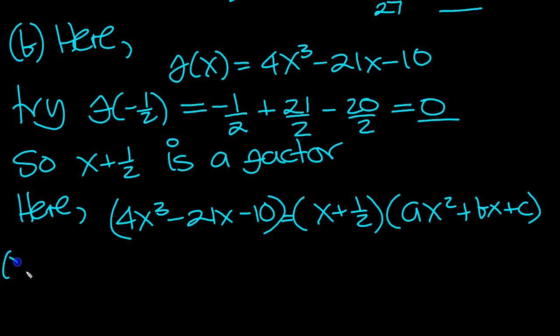So looking at x cubed then here, it's easy to see that on this side we've got four of them. On the other side we're only going to have a x cubed. So we know a is 4. This a is 4.